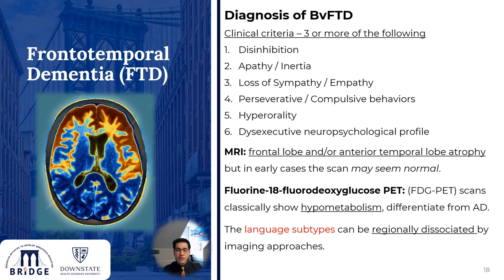The diagnosis of the behavioral variant FTD depends on having three or more of the following clinical criteria: disinhibition, apathy, loss of sympathy or empathy, perseveration or compulsive behaviors, hyper-orality, and executive dysfunction on neuropsychological testing. The MRI may show frontal lobe or frontal lobe with anterior temporal lobe atrophy, but in early cases the scan may appear absolutely normal.